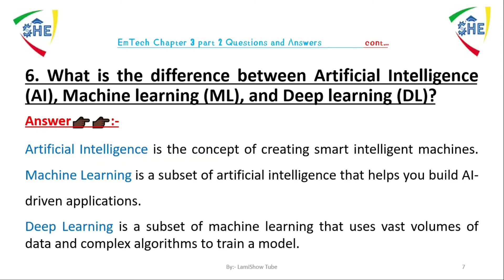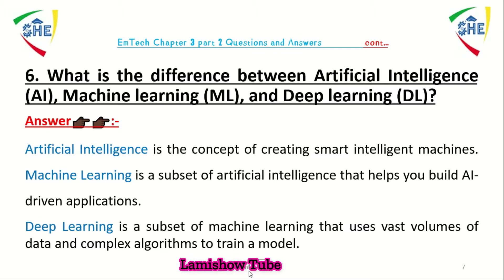Artificial intelligence is about making or creating intelligent machines. Machine learning is a subset of artificial intelligence that helps to build artificial intelligence. Deep learning is a subset of machine learning that uses a large amount of data and complex algorithms to train a model.